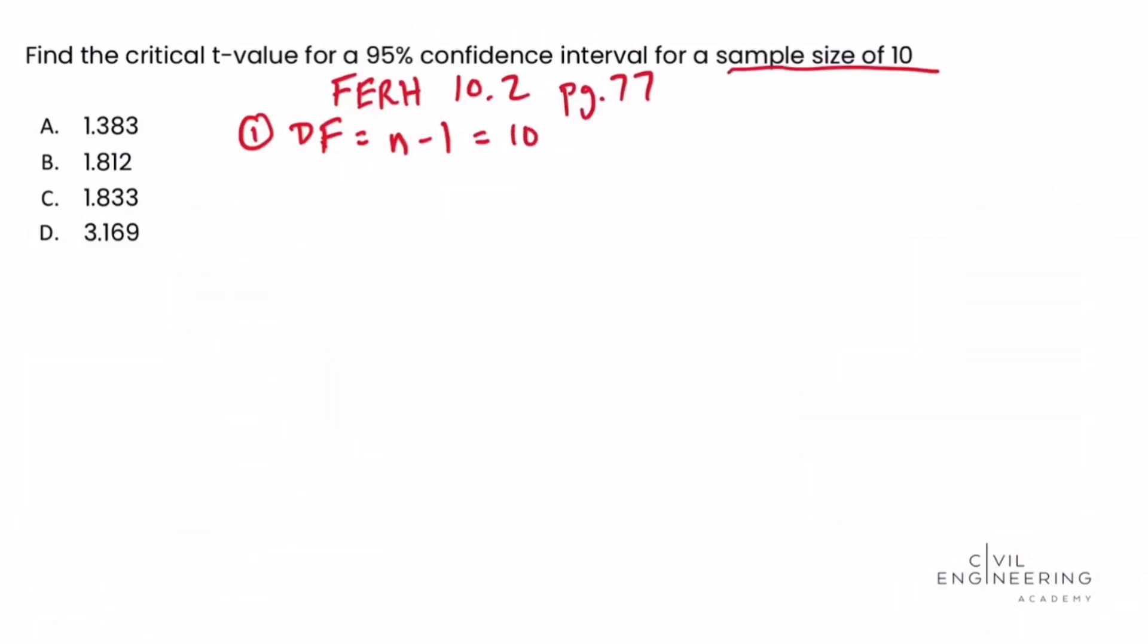So 10 minus 1 equals 9. And then we're going to turn to the reference handbook on the chart on page 77 of the t-distribution. And that first column has a series of numbers ranging from 1 to 30, and it jumps to infinity. So that column is the degrees of freedom column. So we're going to work our way down that column until we get to 9, because we said there's 9 degrees of freedom. And then we're going to work our way across the column or towards the right of the page.